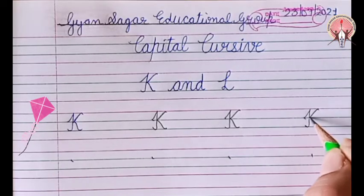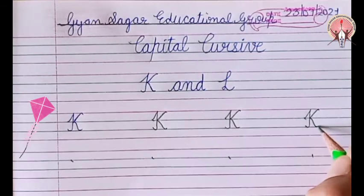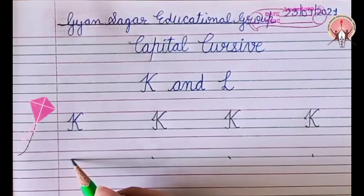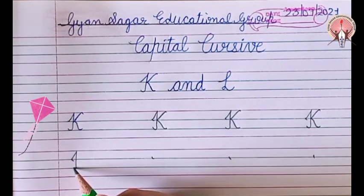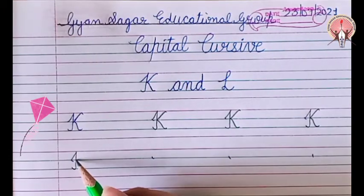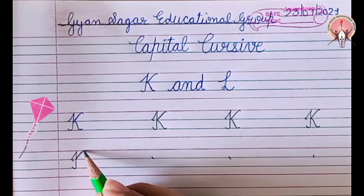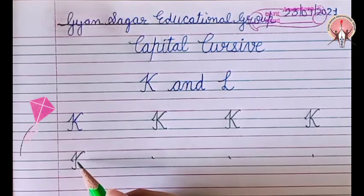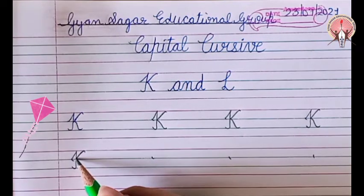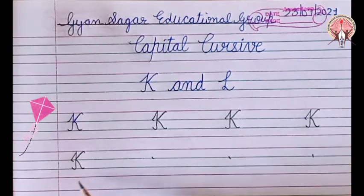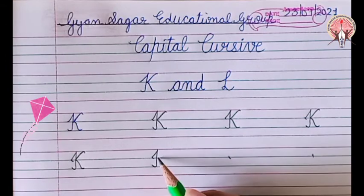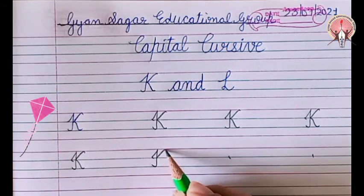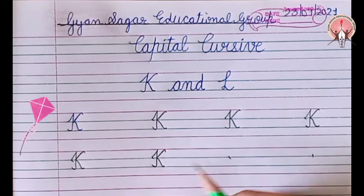K for kite. Go up. Come down. Make a small curve. Come to the middle. Go upwards. Now again come to the middle. Go downwards. K. Capital cursive K.